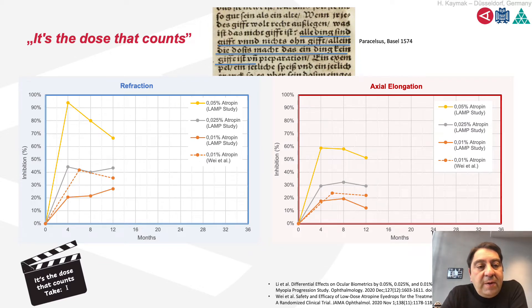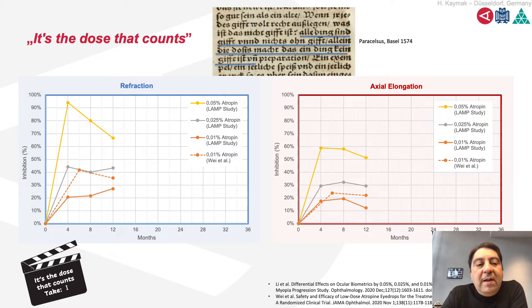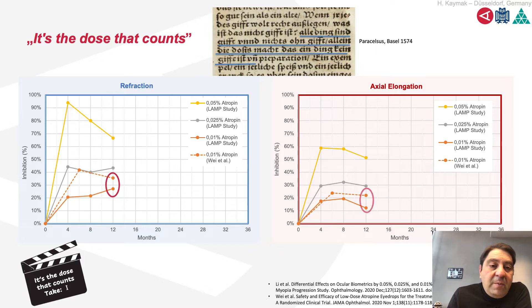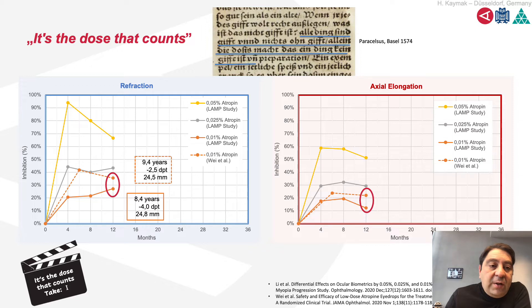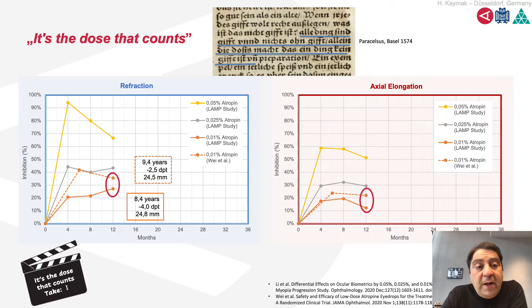For atropine, we have different studies and here are the results. What is really clear is that the results depend on the concentration of atropine. With low concentration atropine, we have different results. The effectiveness of atropine depends on axial length, on refraction, and on the age when starting therapy.